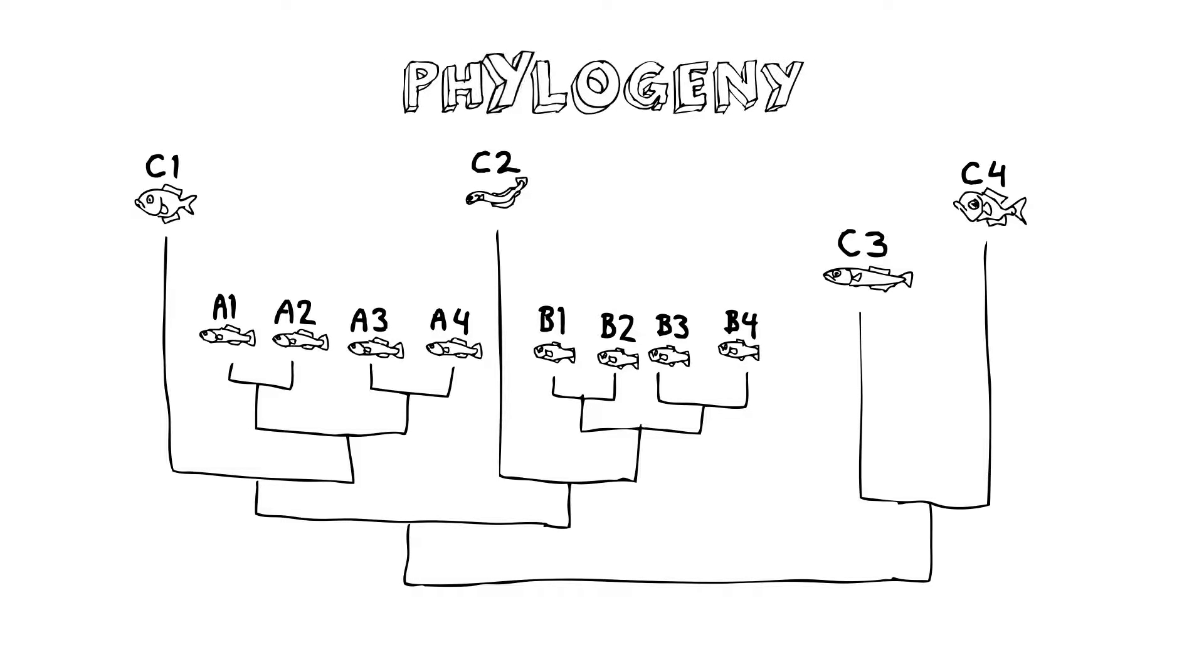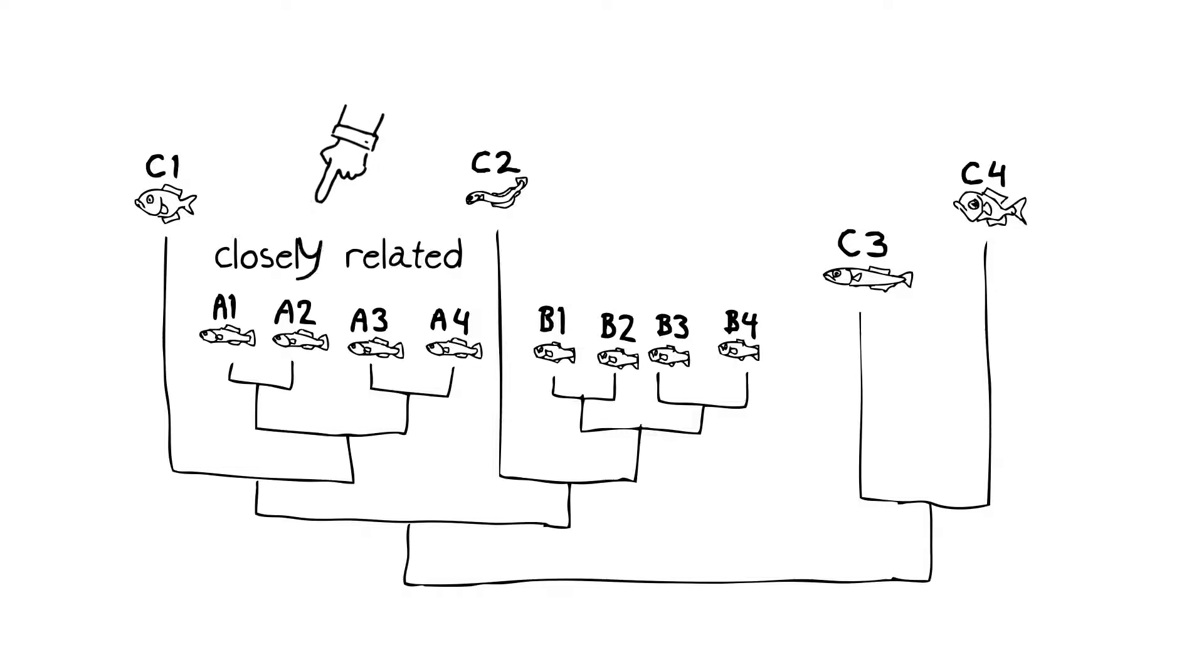The first thing you can observe is that the four species in Lake A are more closely related to each other than they are to anything else, and the same is true for the four species in Lake B. But we've got one species from Lake C that's more closely related to those in Lake A, and another C species that's more closely related to the B species.